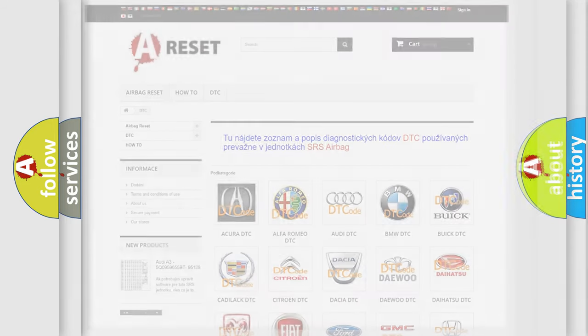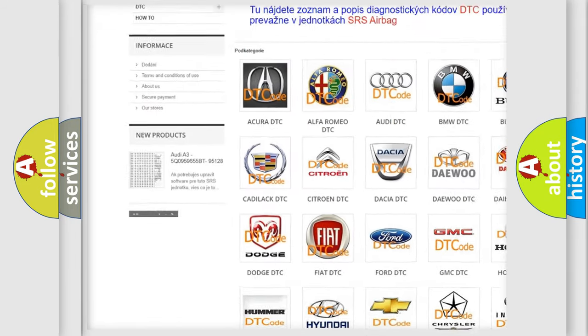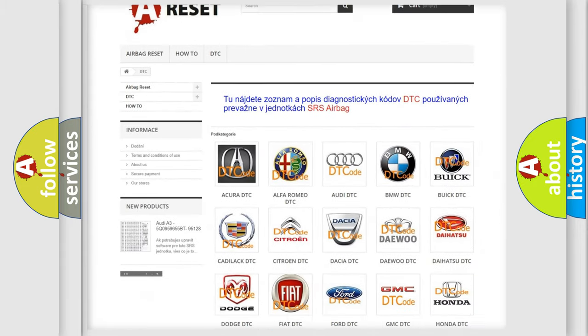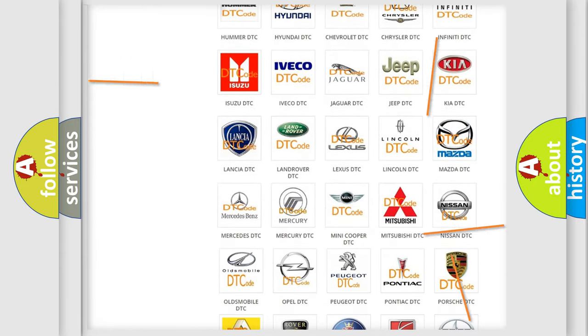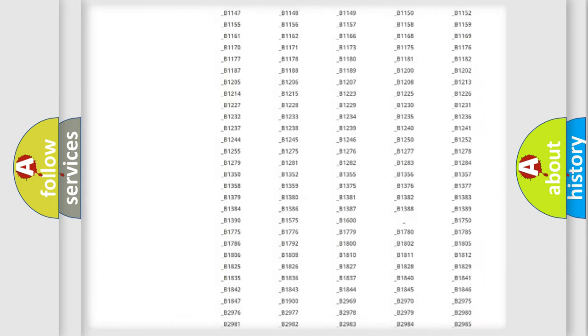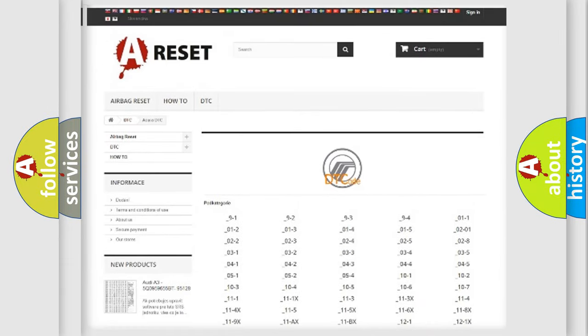Our website airbagreset.sk produces useful videos for you. You do not have to go through the OBD2 protocol anymore to know how to troubleshoot any car breakdown. You will find all the diagnostic codes that can be diagnosed in Mercury vehicles.